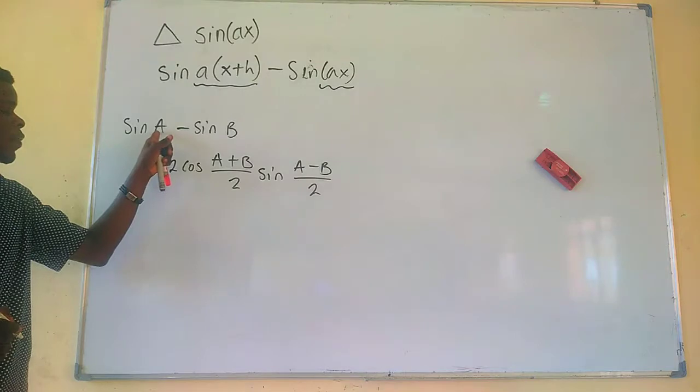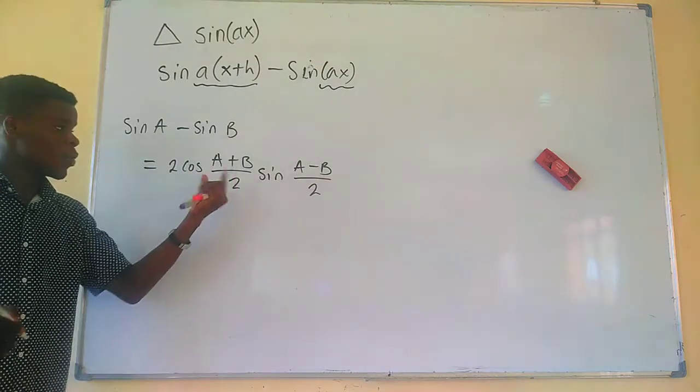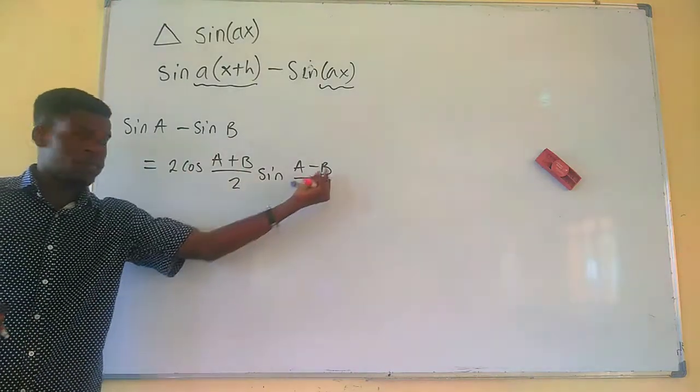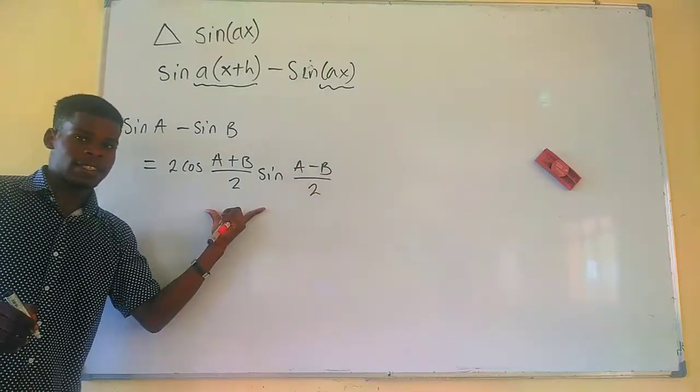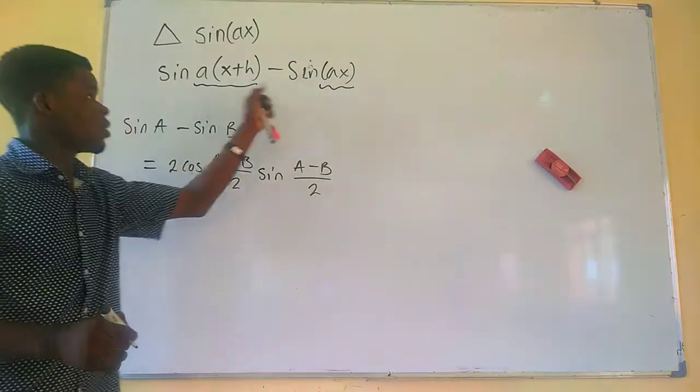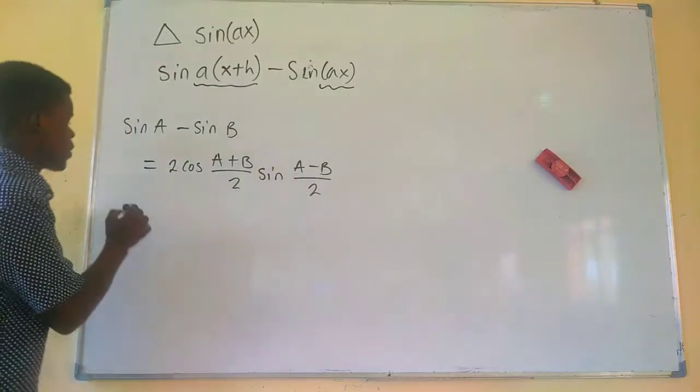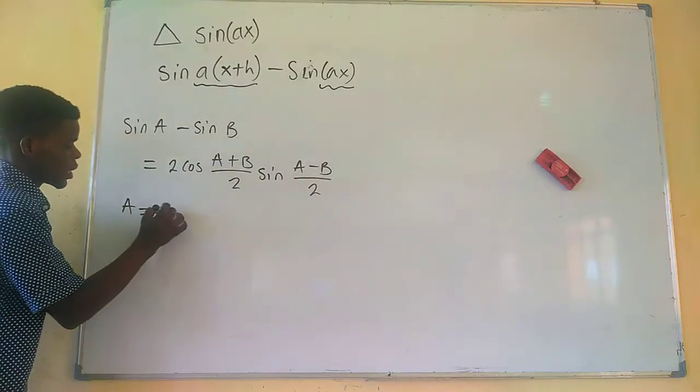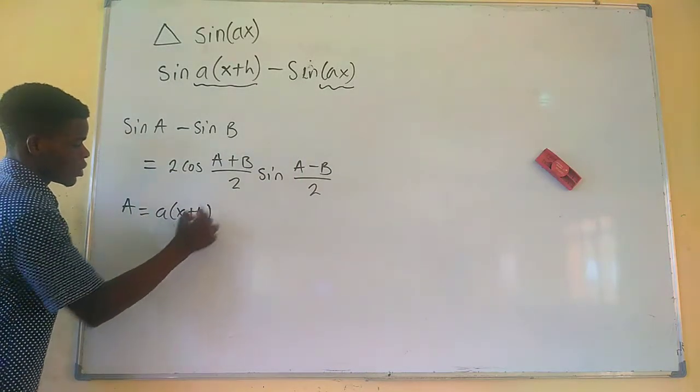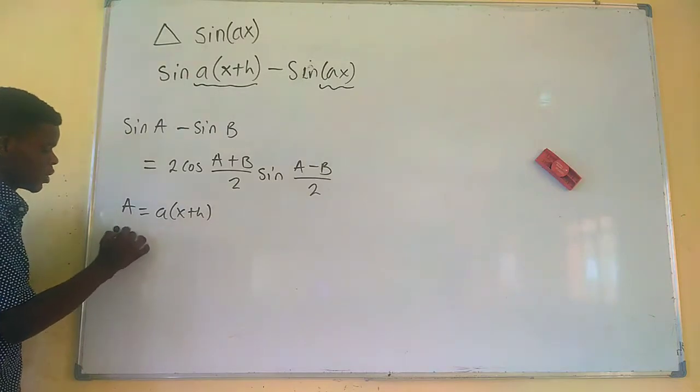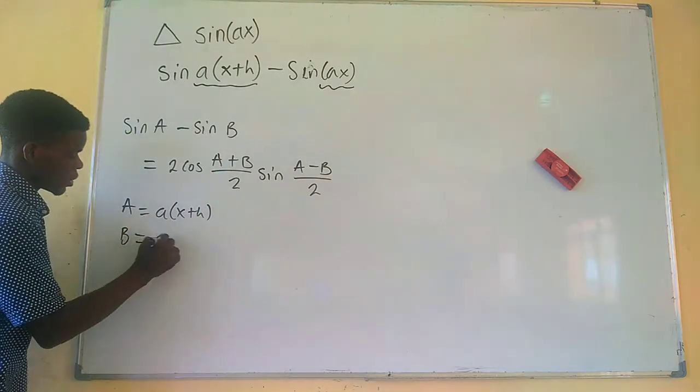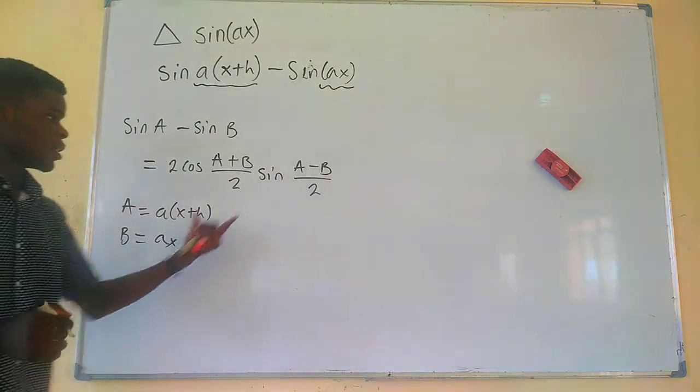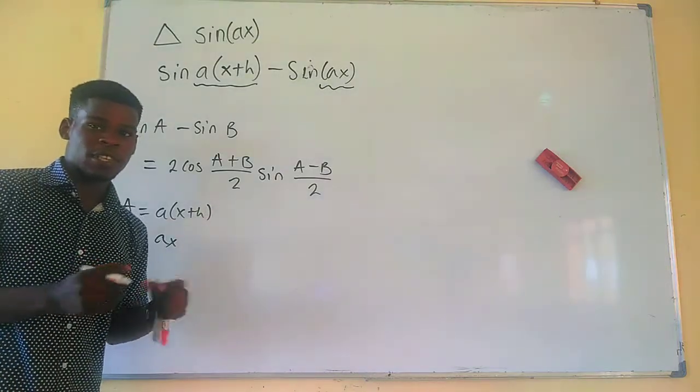So we are just going to have for sine A, sine B, we are going to add the two angles to divide it by 2 and subtract and divide it by 2 and multiply it like this. So I am going to apply that right here. So you are going to observe that our A is equal to a times x plus h, and our B is equal to ax. So we just apply this in here and we do some simplification and we are done.